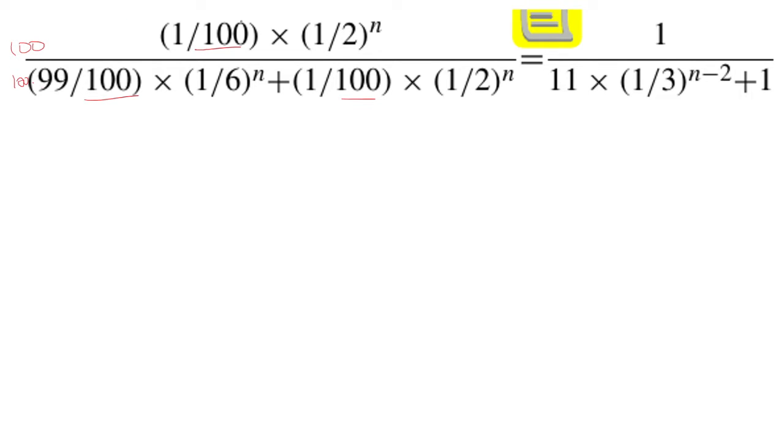So this 100 goes away. I'm left with (1/2)^n. And now this 100 has to distribute to both the (99/100) × (1/6)^n and the (1/100) × (1/2)^n.